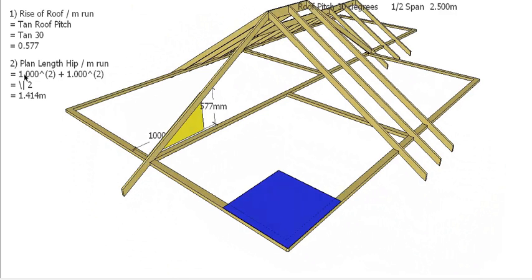A bit of Pythagoras: meter squared plus a meter squared equals 2, square root of 2 is 1.414. So the plan length of the hip for every meter this way is 1.414 meters.